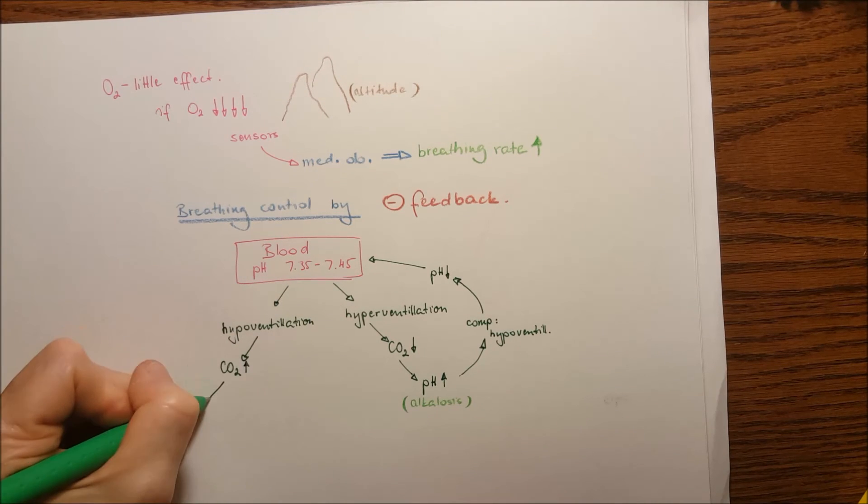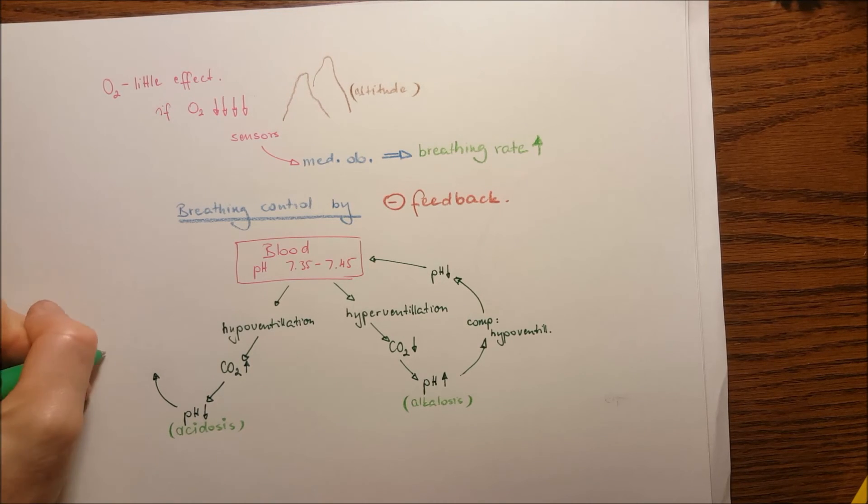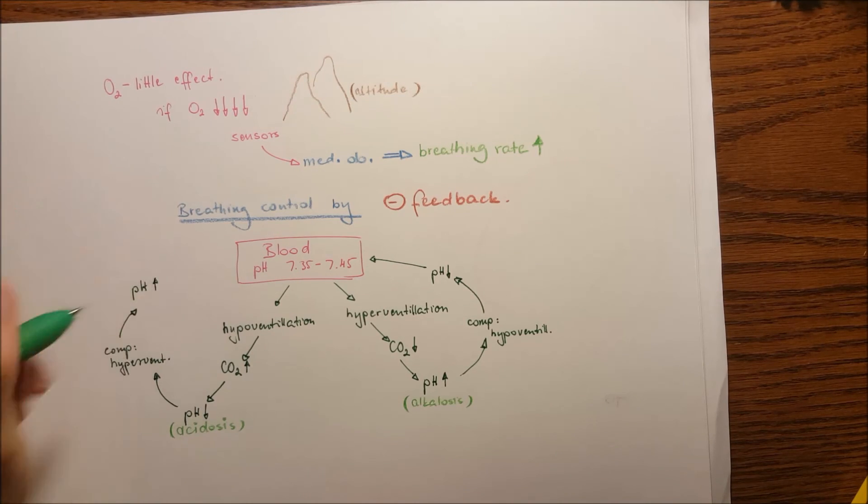The carbon dioxide concentration will increase, the pH level will go low, so acidosis will happen. And the compensation will be hyperventilation to get the excess carbon dioxide out and the pH will increase a little bit to go back to normal.